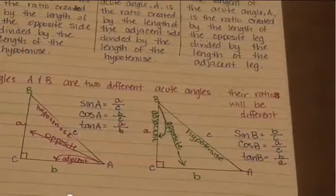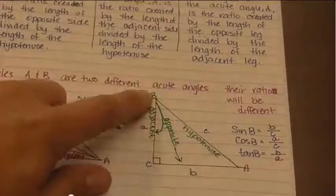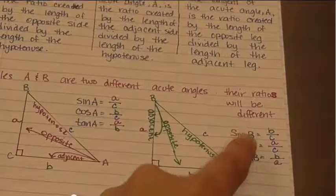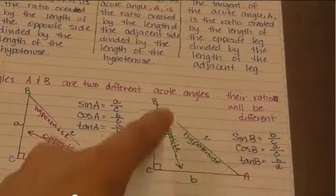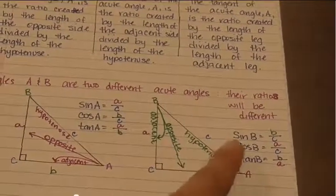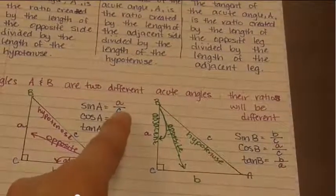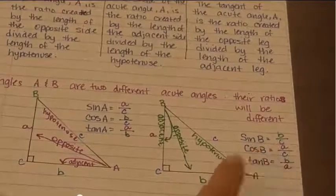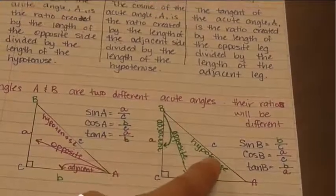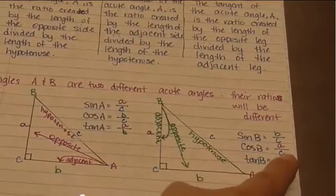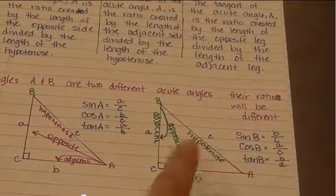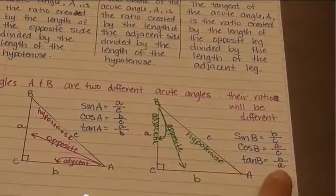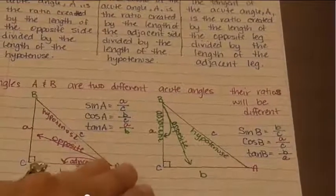If I do the same triangle but go from the other acute angle, which is angle B, I would have something different. The sine of B is opposite over hypotenuse — so instead of a over c, it's b over c. The cosine of B is the adjacent over the hypotenuse, which is a over c. And the tangent of angle B is the opposite over the adjacent — they switch sides — so now it's b over a.